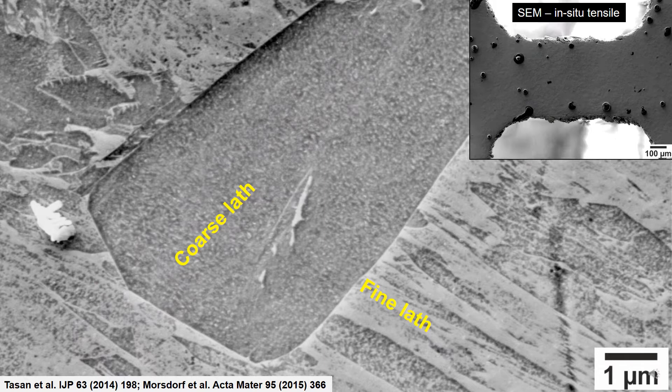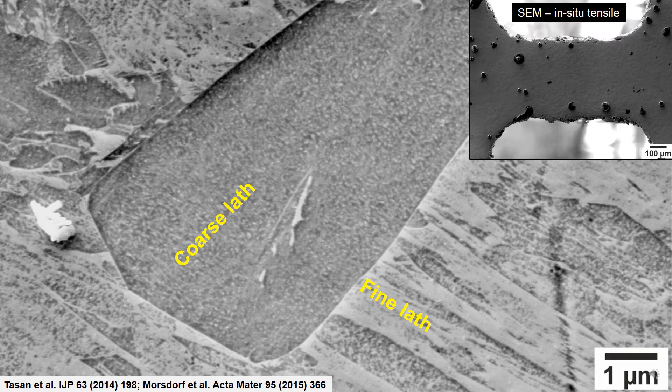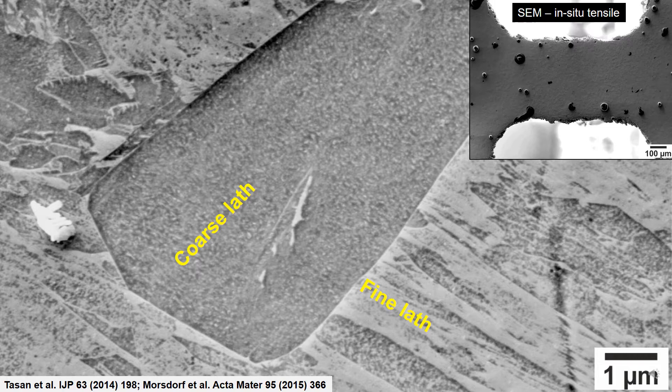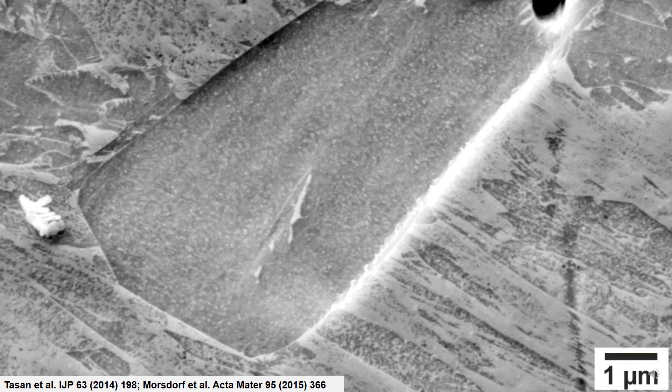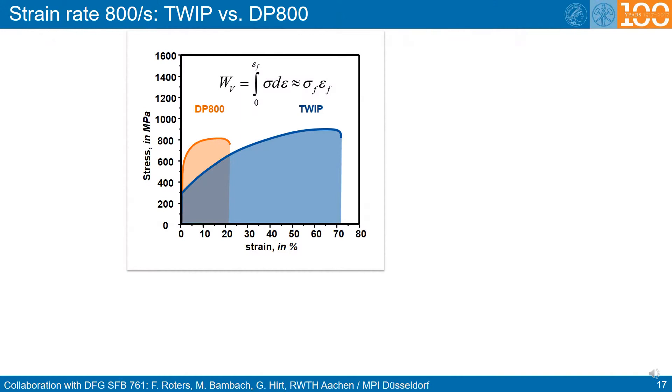So here is the relevance of these martensitic features for damage initiation. Here you see very fine lath structures encountering a coarse lath structure. And when you do this in an in-situ tensile test, like here in the scanning electron microscope, you see that is for instance a region of damage. And we will come back to this in much more detail.